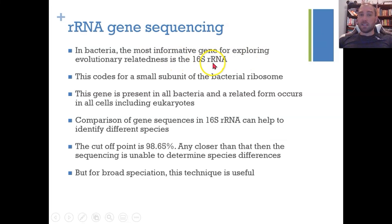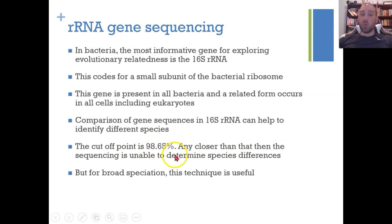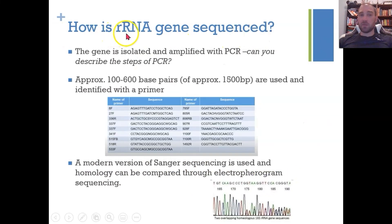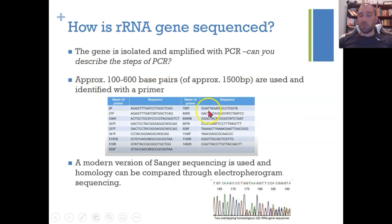The most informative gene is the 16S rRNA gene, which codes for the small subunit RNA in the bacterial ribosome. It is present in all bacteria, with a similar form in all eukaryotes. The cutoff point is 98.65% similarity — above that we cannot distinguish species using this technique. The gene is isolated and amplified using PCR, with approximately 100–600 base pairs of the ~1,500 base pair gene used. A modern version of Sanger sequencing is used, and homology compared using electropherogram sequencing.